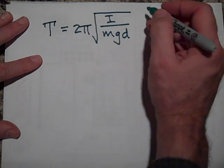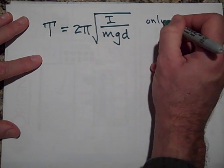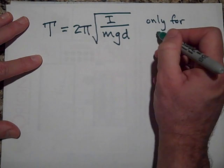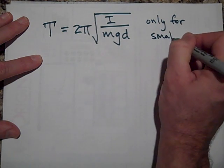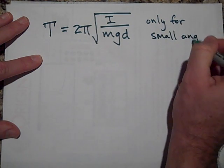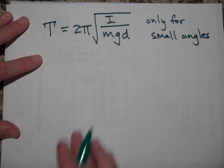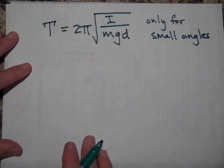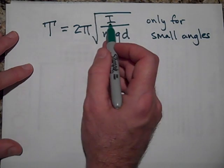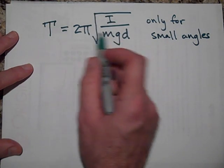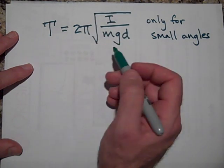And this is only for small angles. In fact, it's an approximation. But let's talk about all these things and 2π is just a constant.